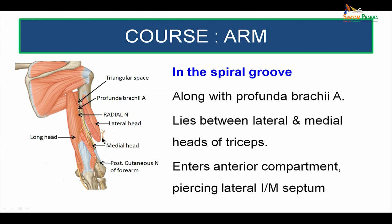In the spiral groove, it lies along with the profunda brachial artery and between the lateral and medial heads of the triceps. It gives off many branches and in the spiral groove it lies flat against the bone. Further down, as it passes obliquely, it pierces the lateral intermuscular septum and enters into the anterior compartment of the arm.